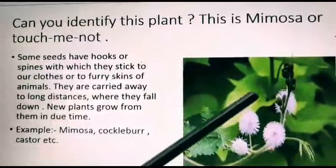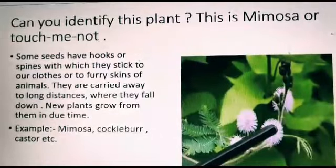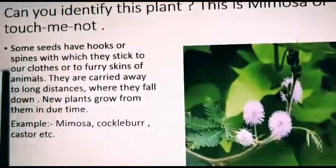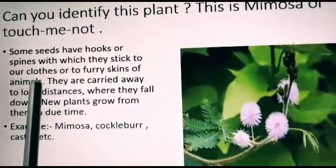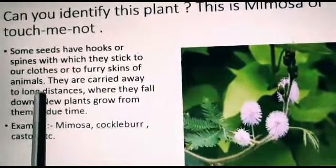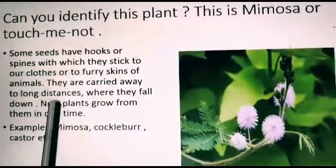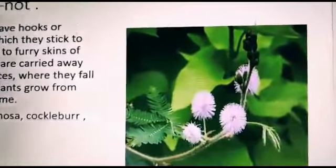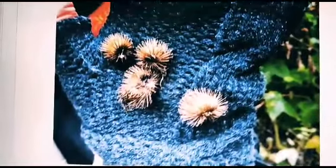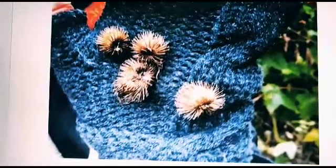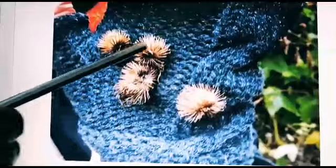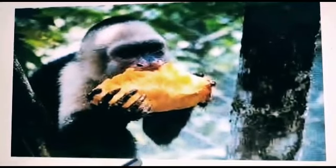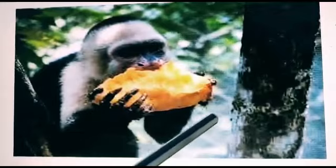Students, can you identify this plant? This is mimosa, or touch-me-not. Some seeds have hooks or spines with which they stick to our clothes or to the furry skins of animals. They are carried away to long distances where they fall down, and new plants grow from them in due time. Examples: mimosa, cocklebar, castor, etc. This is the picture of cocklebar seeds getting stuck to clothes. And this is the picture of a monkey eating fruits and throwing its seeds.